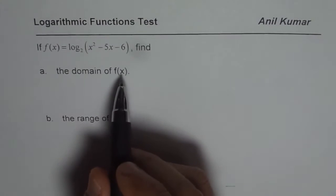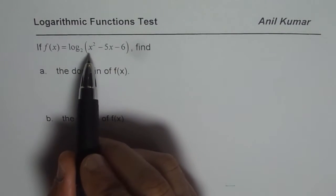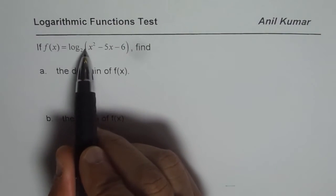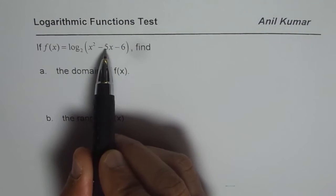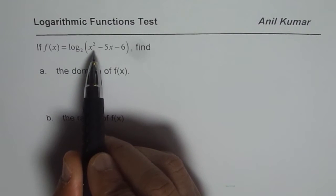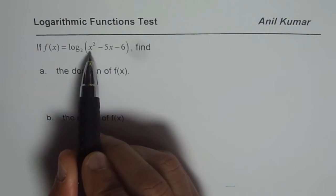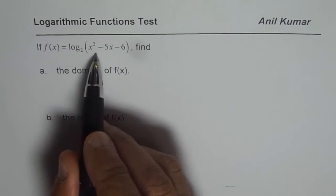Now, to find the domain, we will figure out that this quadratic function, which is the argument for log₂(x), should always be positive, greater than 0. So, that should give us the domain.